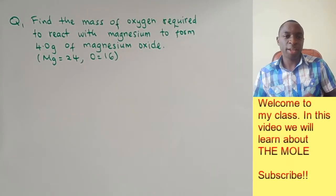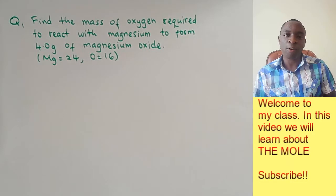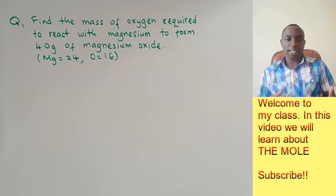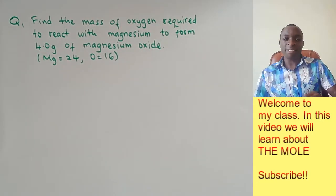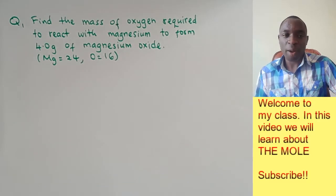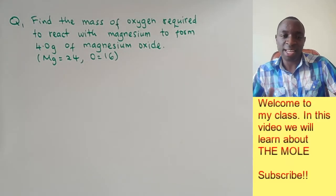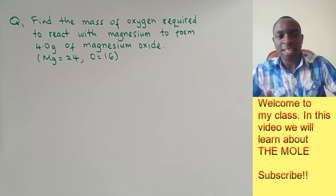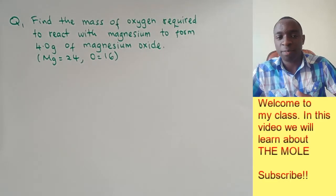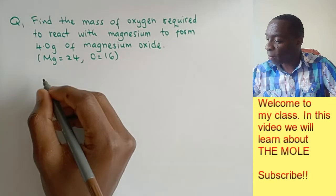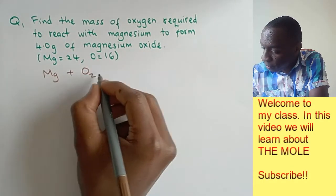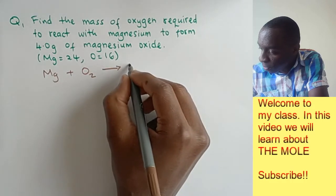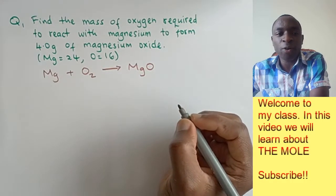In this first example, you're supposed to find the mass of oxygen that is required to react with magnesium to form four grams of magnesium oxide. This is a very simple kind of question, whereby the first thing you need to do is to write the stoichiometric equation. So when magnesium reacts with oxygen, it forms magnesium oxide.